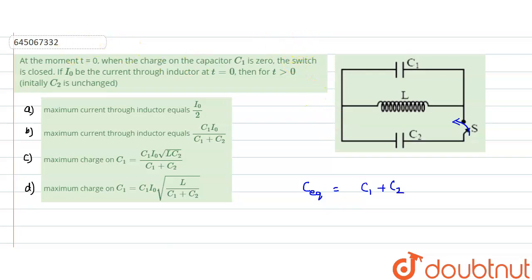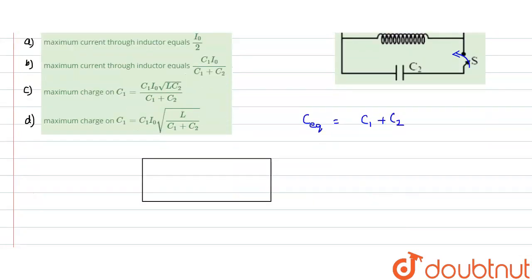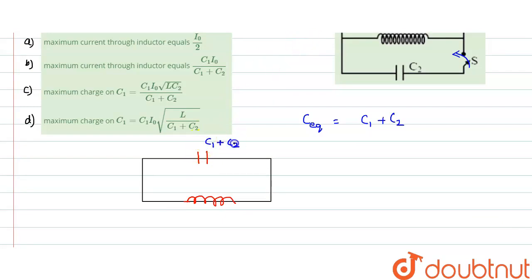Now if we just draw our circuit — so we have a capacitor here and we have an inductor here. This is our inductor, this is our capacitor. Now this is our C equivalent, that means C1 plus C2, and this is our inductor L.